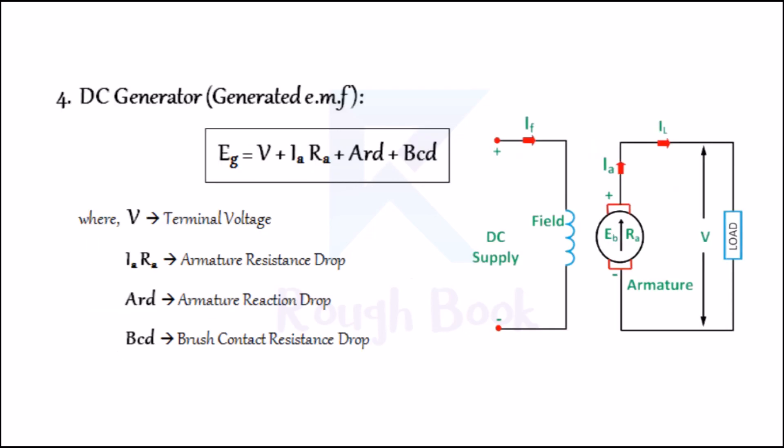Number four: DC generator generated EMF. This is when the DC generator is on load. The figure is the symbolic representation of the DC generator with its armature and field windings. The generated EMF, EG, is given as V + IARA + ARD + BCD, where V is the terminal voltage, IARA is the armature resistance drop, ARD is the armature reaction drop, and BCD is the brush contact resistance drop.